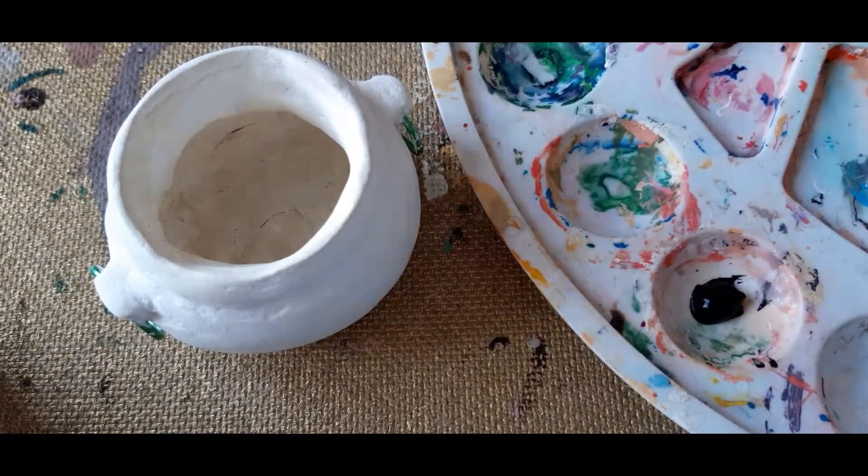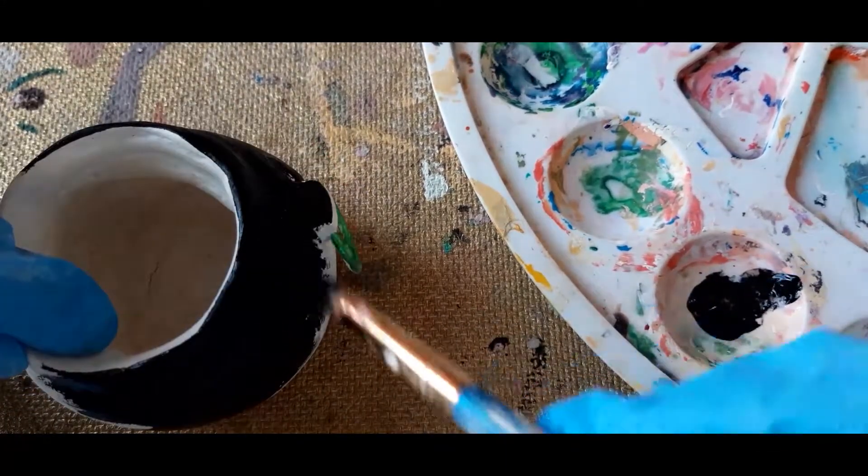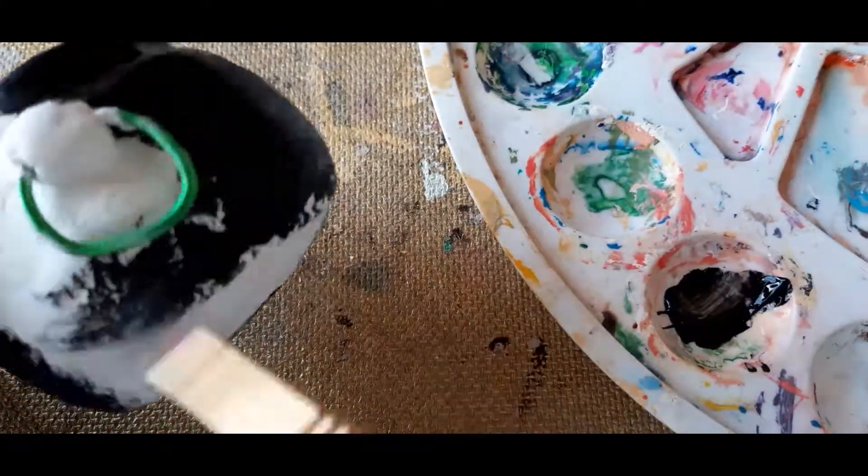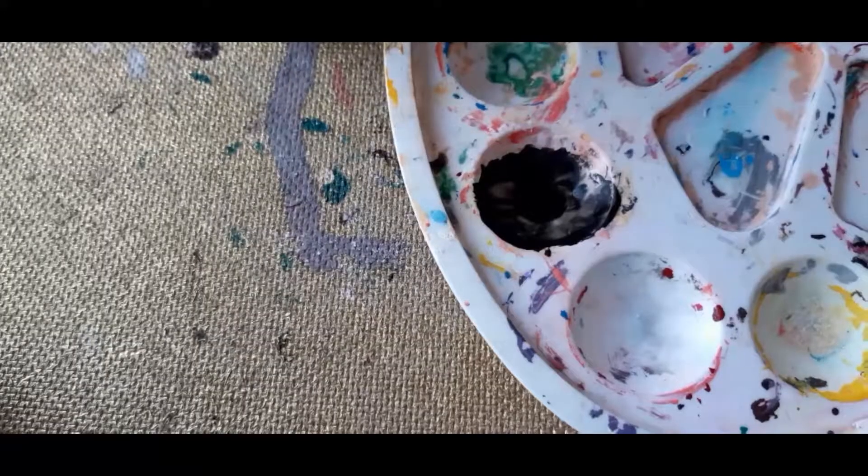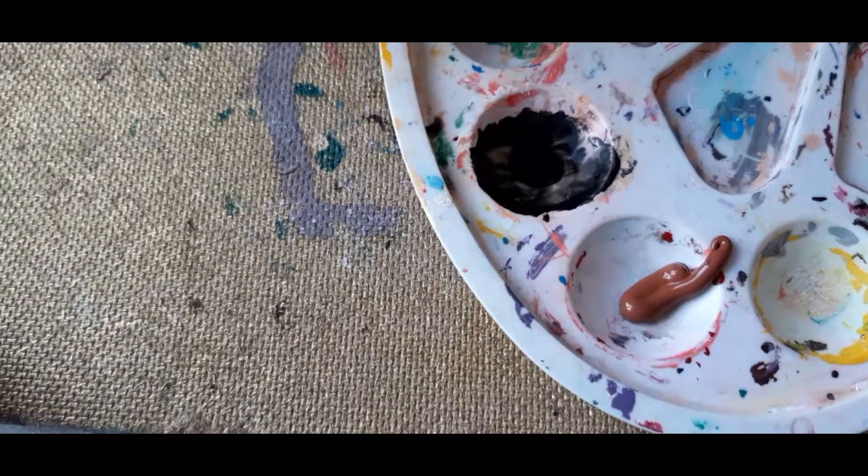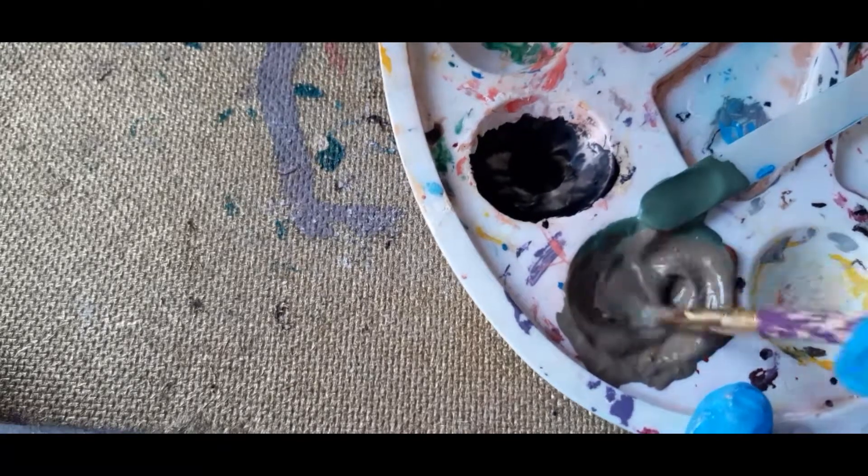I used wet fabric to clean the cauldron from dust. I painted everything using black acrylic paint. Then I mixed burnt sienna and green acrylic paint for the next shade.